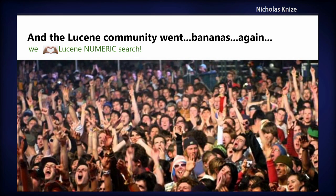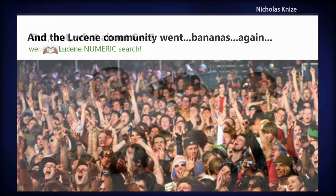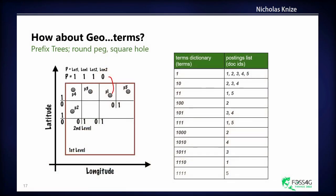The Lucene community went bananas again because now we can do numerics and free text search, but then geo people were not happy, because this doesn't work well for geospatial data. Why? Something called dimensionality. Most of you folks are probably aware of that.